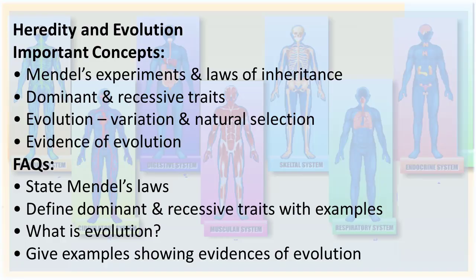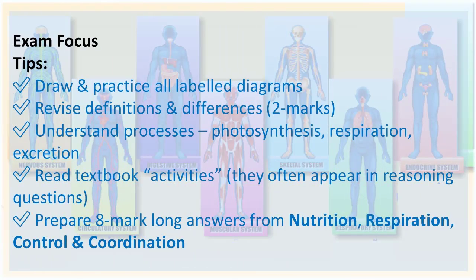From Heredity and Evolution, important concepts are Mendel's experiments and laws of inheritance, dominant and recessive traits, evolution, variation and natural selection, and evidence of evolution. FAQs are: state Mendel's laws, define dominant and recessive traits with examples, what is evolution, and give examples showing evidences of evolution.